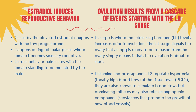Estradiol induces reproductive behavior. Elevated estradiol coupled with low progesterone induces profound behavioral changes in the female. The female becomes sexually receptive and copulation occurs during the follicular period. It is crucial to understand that ovulation and the estrus period are closely related, but ovulation comes first. The female stands to be mounted by the male as the culmination of estrus behavior. Ovulation results from a cascade of events starting with the LH surge, where luteinizing hormone levels increase prior to ovulation, signaling the ovary that an egg is ready to be released.